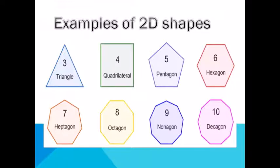So, let's revise the quality of 2D shapes. First, triangle. Triangle has 3 straight sides and 3 corners. Quadrilateral has 4 sides and 4 angles. Pentagon has 5 sides and 5 angles.